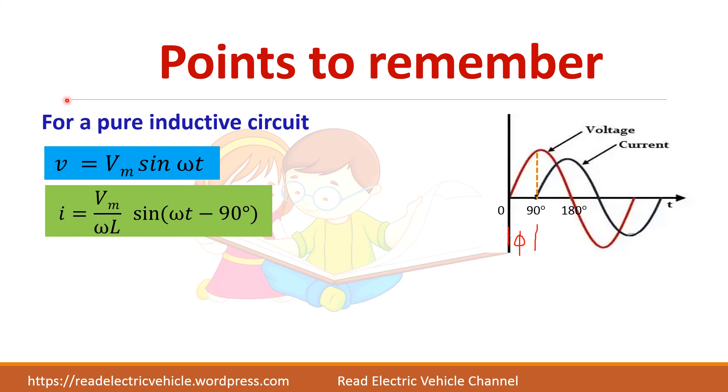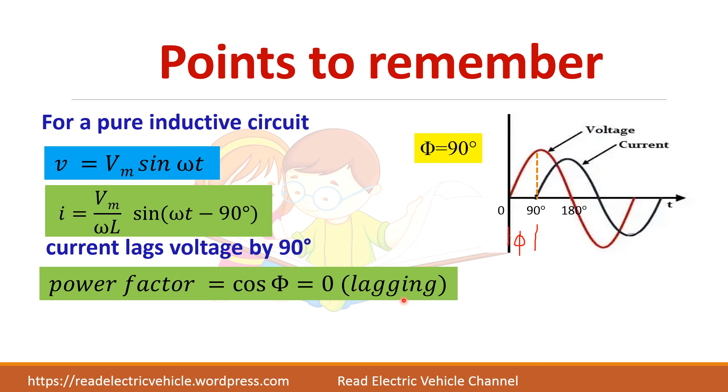Next, the points to remember here are: for a pure inductive circuit voltage is Vm sin ωt, the current is Vm sin(ωt - 90°), that is there is a phase difference of 90°. So power factor will be zero and the circuit is said to be a lagging circuit, and the average power is zero, and the impedance is given by XL equals Lω or Z equals Lω where XL is called the inductive reactance.